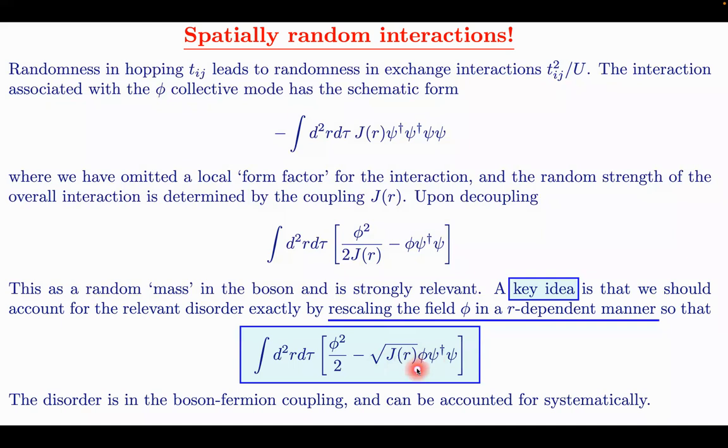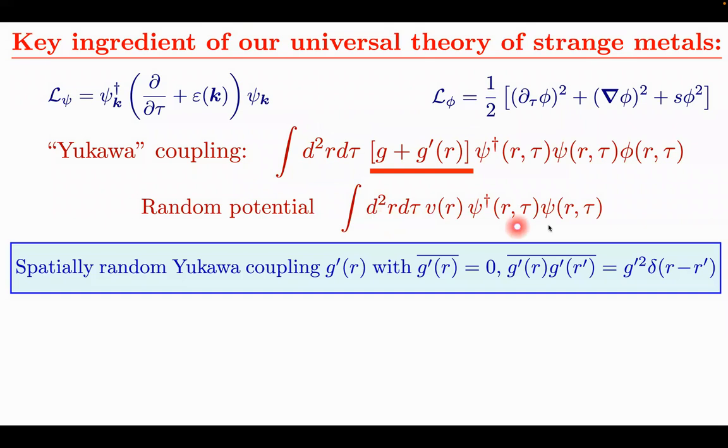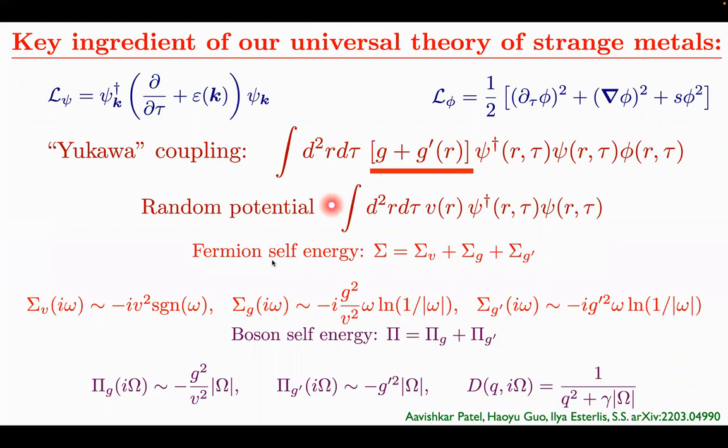So therefore, the model we want to consider now, in addition to the potential disorder I described, has a G, which is the usual Yukawa coupling that everyone uses. But I add another term, G prime, which has zero mean and mean square value G prime squared. Now you go ahead and turn the crank. And I'll say a little bit more about the crank at the very end of my talk. And what happens? Well, first of all, when you look at the self energy, it's nothing new, really, in the end, because the boson's Landau damping, in addition to having a G squared term, has a G prime squared term mod omega. And so it's the usual diffusive boson. And the self energy, therefore, also has an omega log omega contribution, one from the random V and the other from the random G prime. So far, it hasn't given anything new.